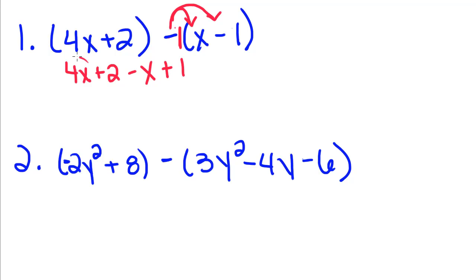So then we're going to combine our like terms. 4x plus a negative x is going to give us 3x, and 2 plus 1 is going to give us 3.